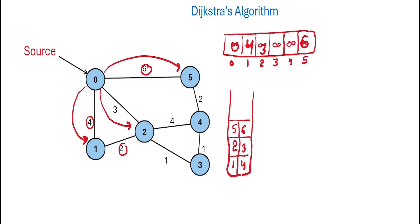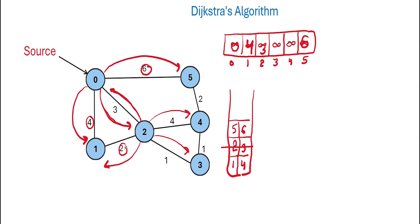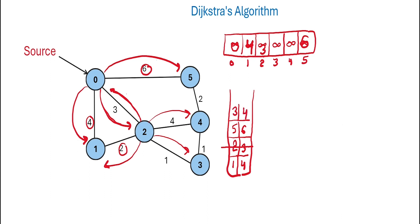We pick the node with minimum distance from the priority queue — that is node 2. From node 2, we can move to nodes 0, 1, 3, and 4. Moving to 0 gives distance 6, which is more than current, so we ignore it. Moving to 1 gives distance 5, also more than current, so we ignore it. Moving to 3 gives distance 4, which is less than current, so we insert 3 with distance 4. Moving to 4 gives distance 7, less than current, so we insert 4 with distance 7.